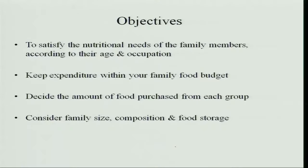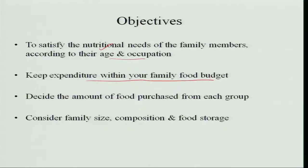The objectives of meal planning: first, satisfy the nutritional needs of all family members according to age and occupation, taking into consideration every member from infant to old age. Second, keep expenditure within the family food budget — when everyone sits together and plans, some members may want expensive food, so we try to keep it within budget. Third, decide the amount of food to be purchased from each group, because without planning, much of the food may go to waste. Unnecessary purchasing is an expenditure.